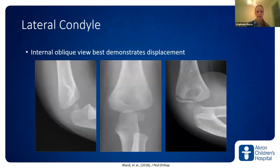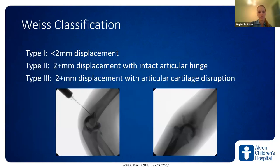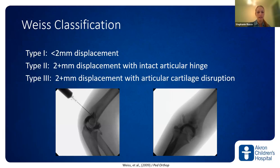Moving on to lateral condyle fractures, which can be challenging to visualize on x-rays. The internal oblique view is very important — it gives a much better picture of displacement. I really like the Weiss classification, which helps guide treatment and anticipate complications. Type 1 fractures with less than two millimeters of displacement are amenable to cast immobilization, but should get serial radiographs for two to three weeks to make sure it's not displacing. I take them out of the cast for repeat x-rays, comparing each week to the original so subtle displacement isn't missed.